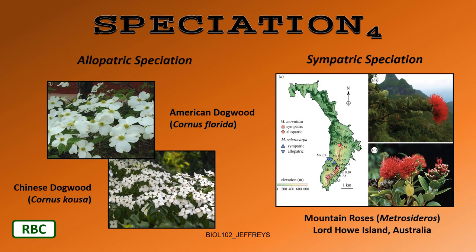This also occurs in plants. Here's allopatric speciation with the American dogwood, Cornus florida, and the Chinese dogwood, Cornus kousa — the same kind of plant evolving in two different geographical locations, one in China and one in North America. You can now buy Chinese dogwoods as ornamental plants alongside American dogwoods. Another example is mountain roses on an island in Australia, where you can see both sympatric and allopatric speciation occurring in species all over the island.